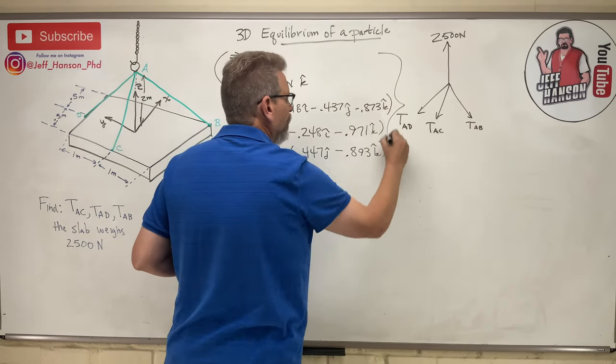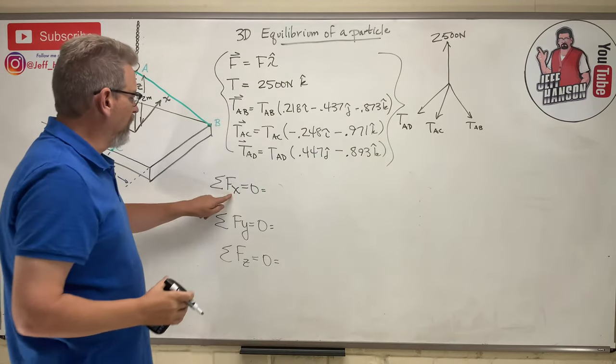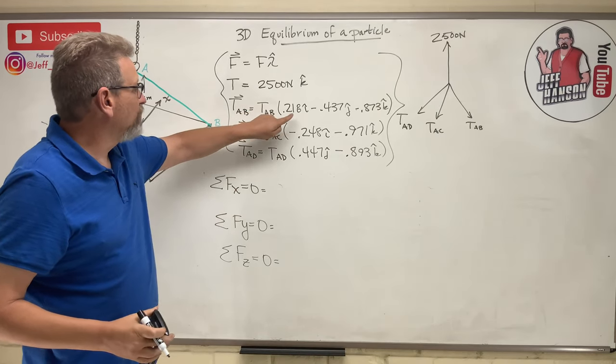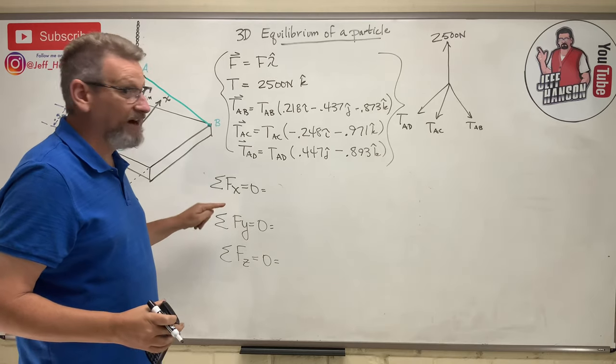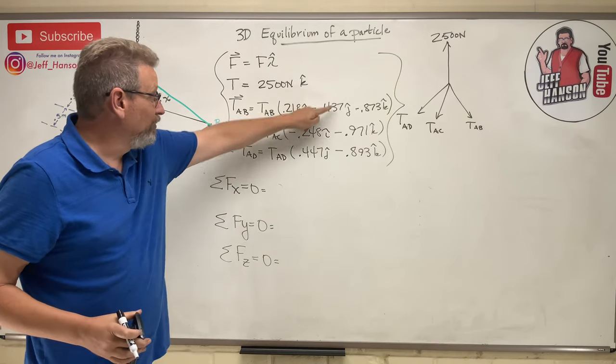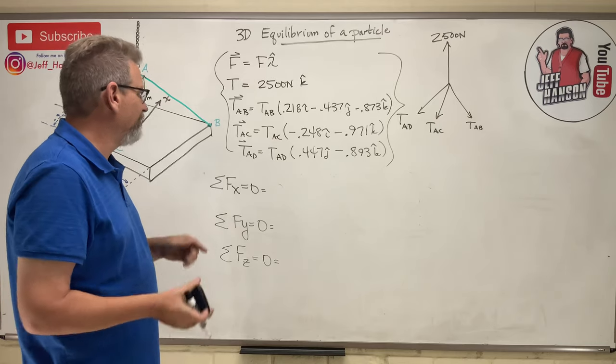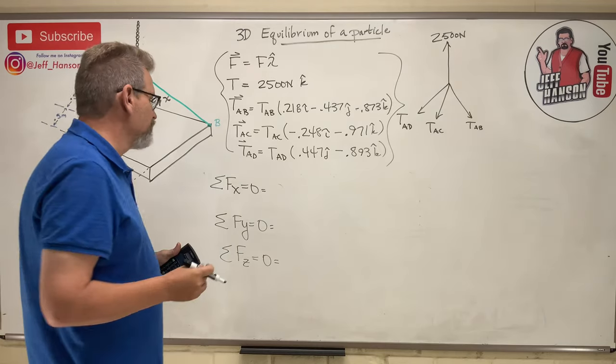So how do I know what to put where? Well, guess what goes in the X equation? Everything that has an i hat on it. So you and you. Who goes in the Y equation? Everything that has a j hat. So you and you. Who goes in the Z equation? Everything with a k hat. So let's just build these equations real quick. And we get, what do we get here?